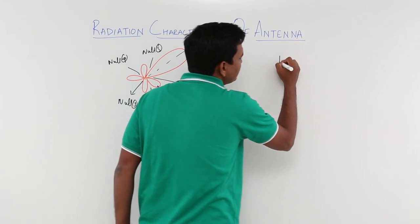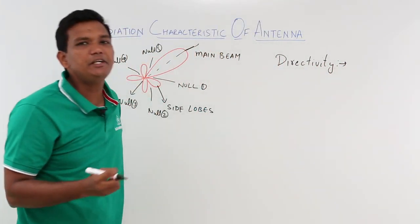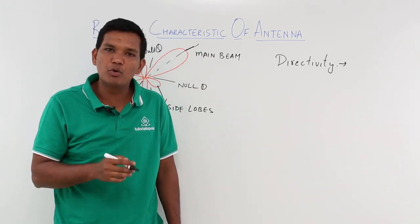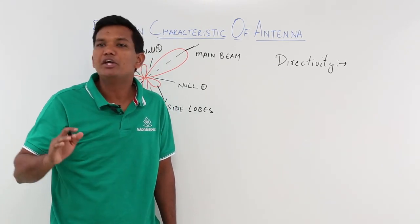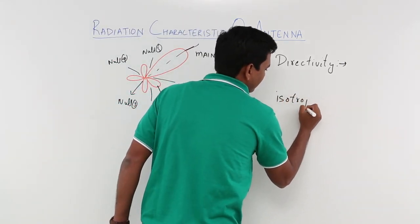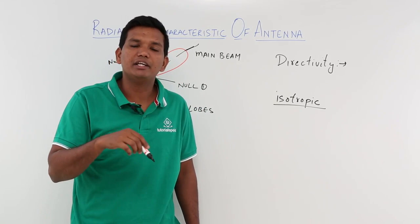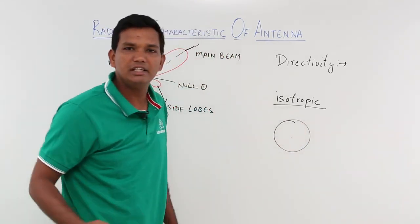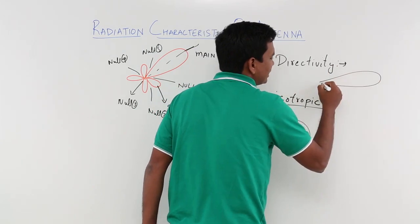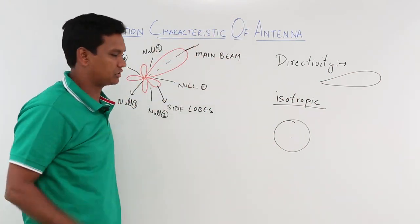One more term we should understand is something called directivity. What is directivity? It is nothing but the capability of the antenna to transmit power in a single direction. If the antenna is more directive, it means it is able to transmit more and more power in one direction. There is another type called an isotropic antenna, which transmits equally in all directions — the radiation intensity all around you will be equal. A directional antenna, on the other hand, is more concentrated in one region, with more focus in one direction.